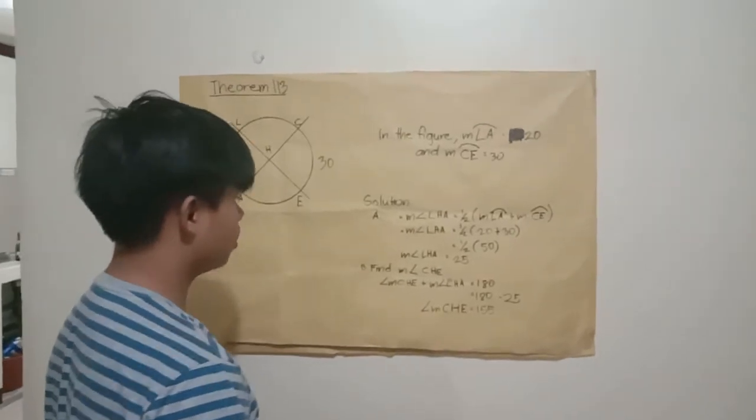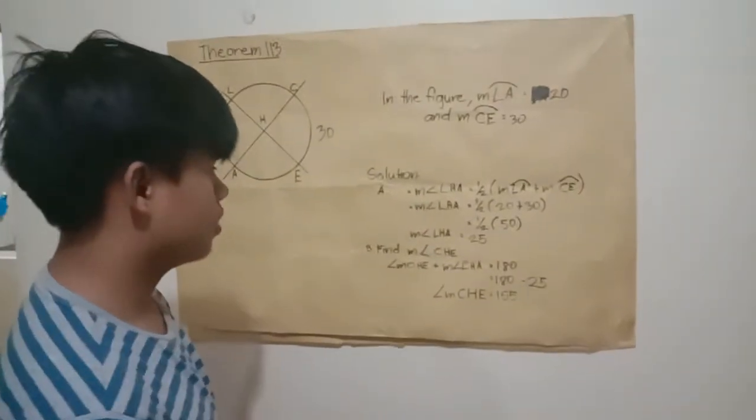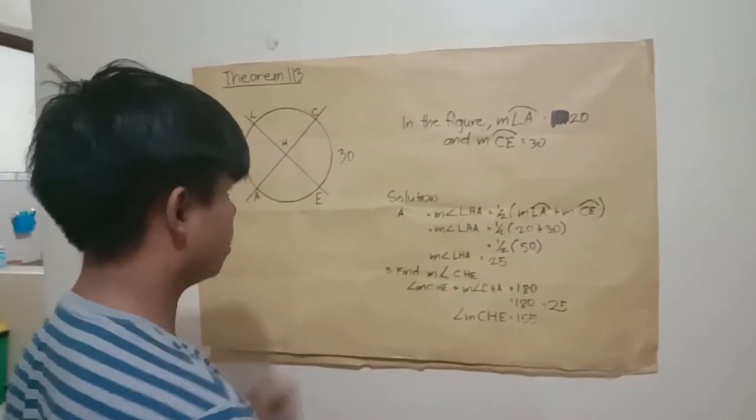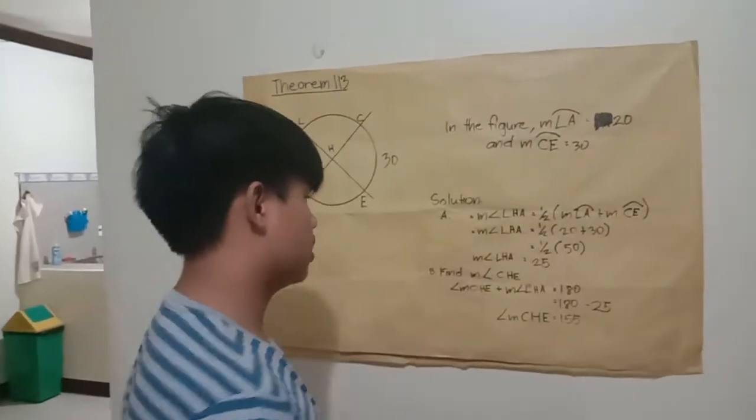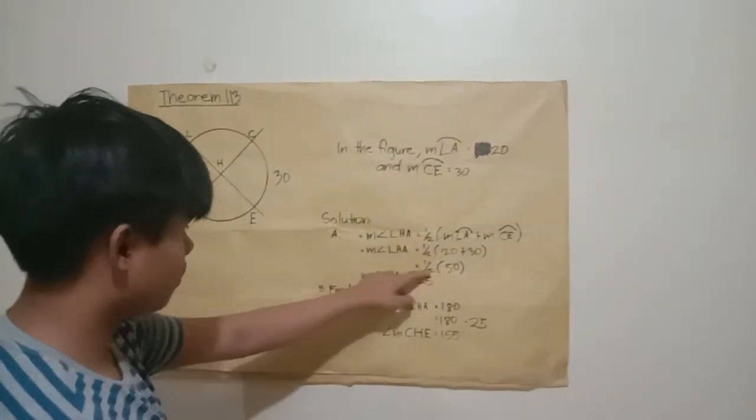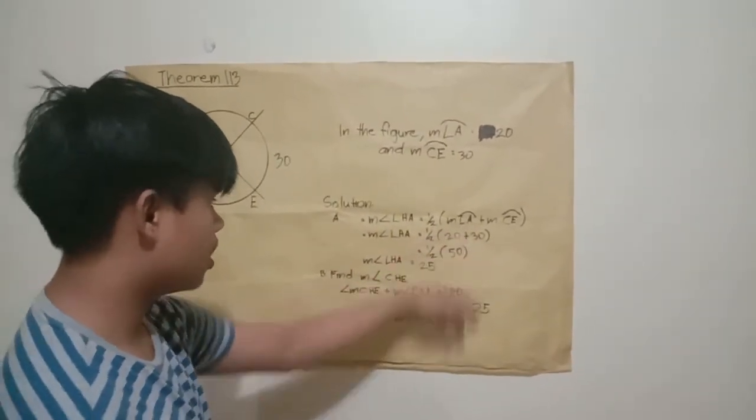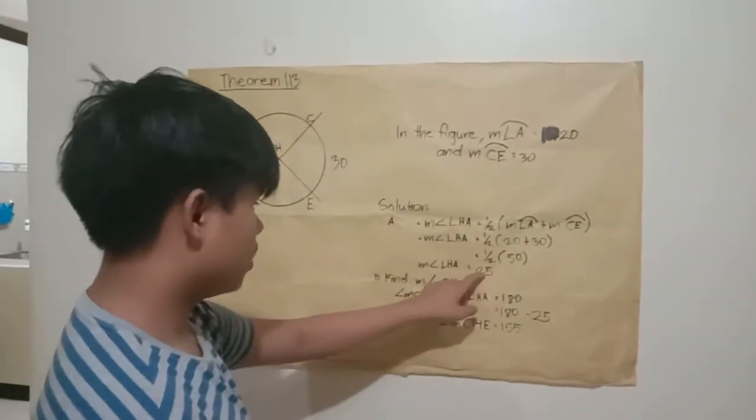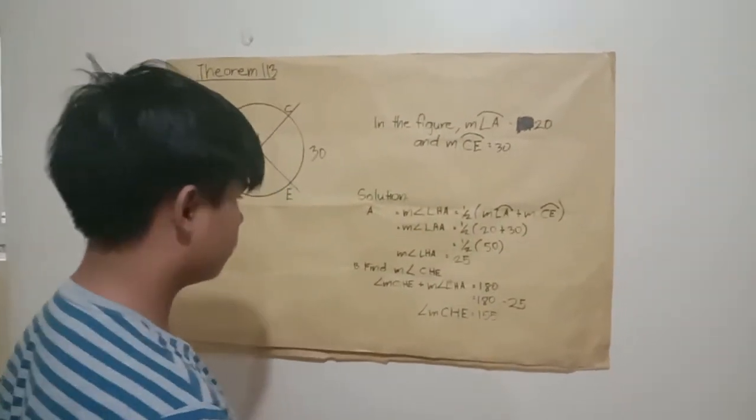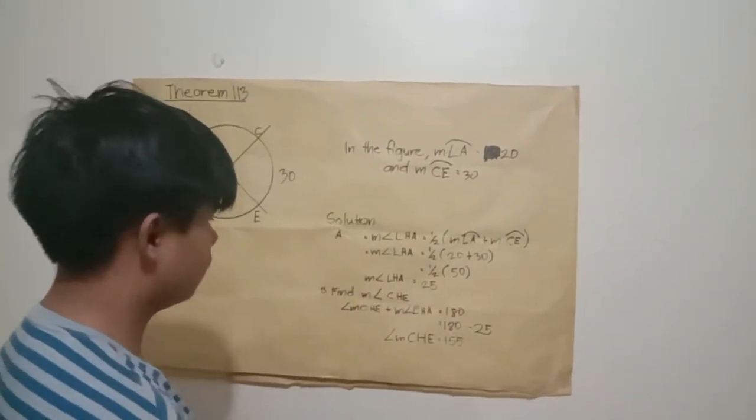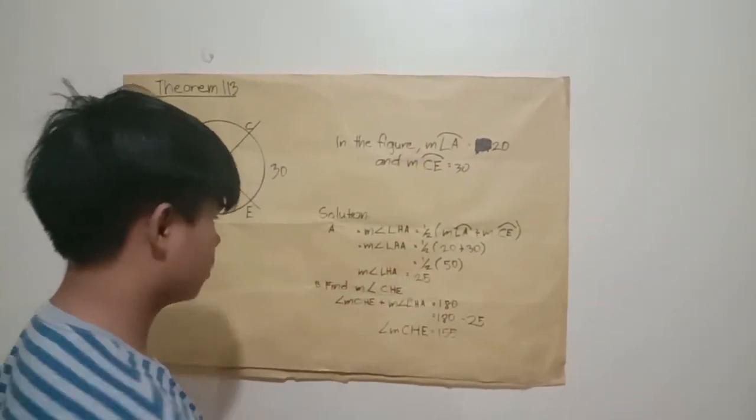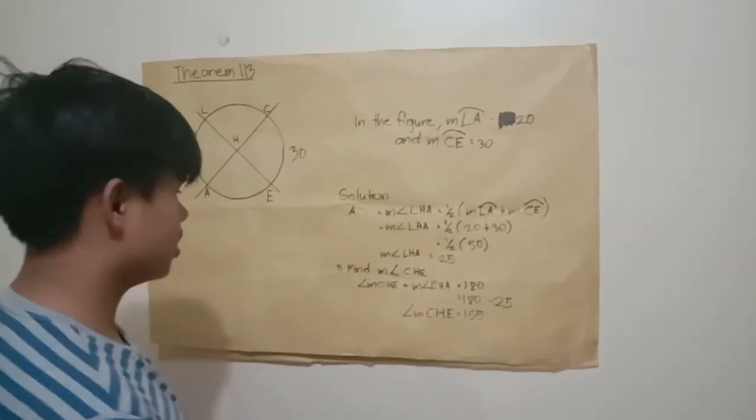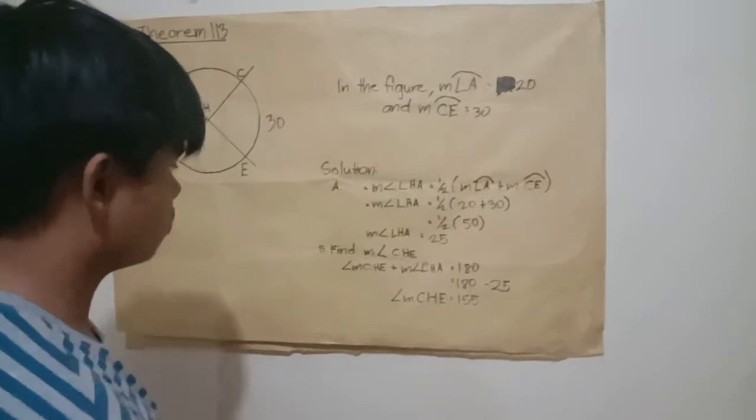Measure angle LHA equals one-half times the sum of measure arc LA and measure arc CE. That's one-half times 50, so measure angle LHA equals 25 degrees.